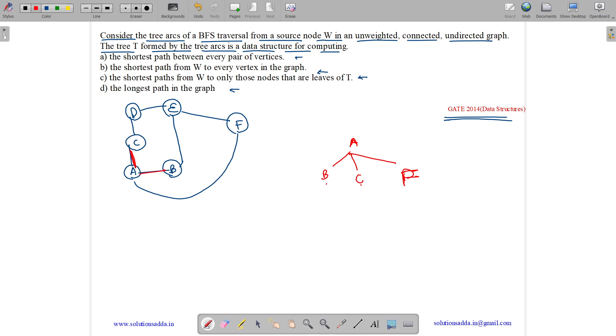Now B will go to its neighbor, it will go to E. A is already done. Now C will go to its neighbor D. And let us suppose G is also here. F will go to G.